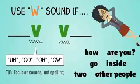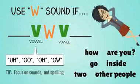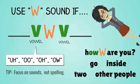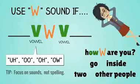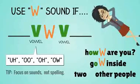If a word ends in the sounds 'oo,' 'uh,' 'oh,' or 'ow,' and the next word begins with a vowel, then the two words are linked with 'wuh.' For example, 'how are you' is pronounced like 'howwaryou.' Linking words with the 'wuh' sound happens even if there isn't a W in the spelling. For example, 'go inside' is pronounced like 'gowunside.' 'Two other people' becomes 'twowother people.'